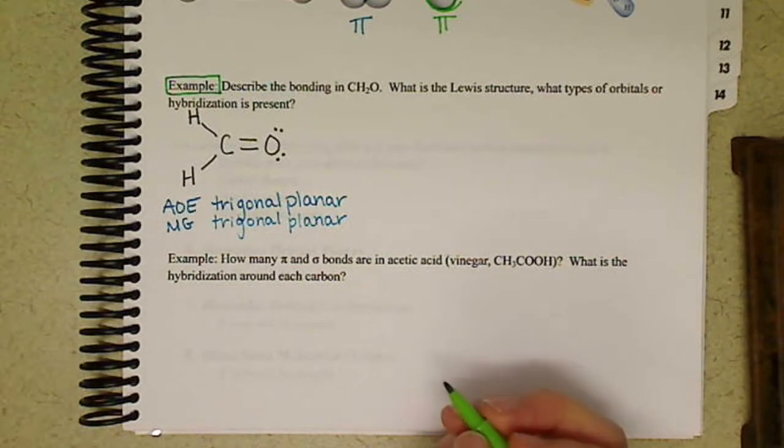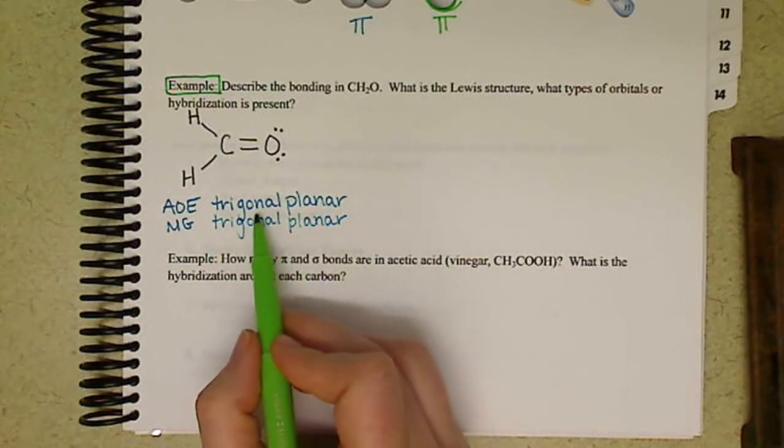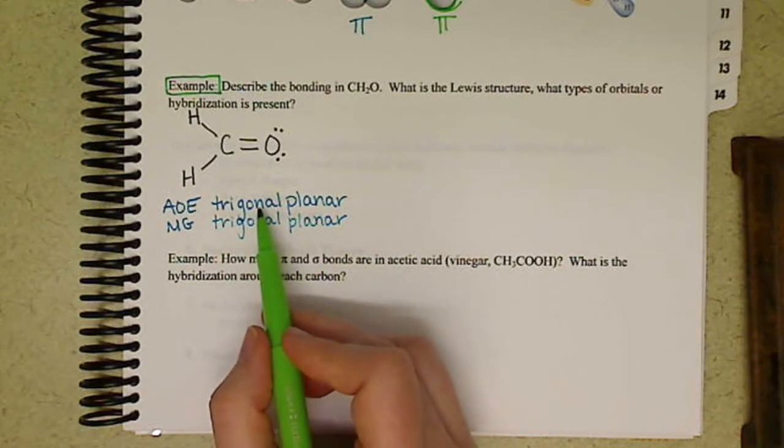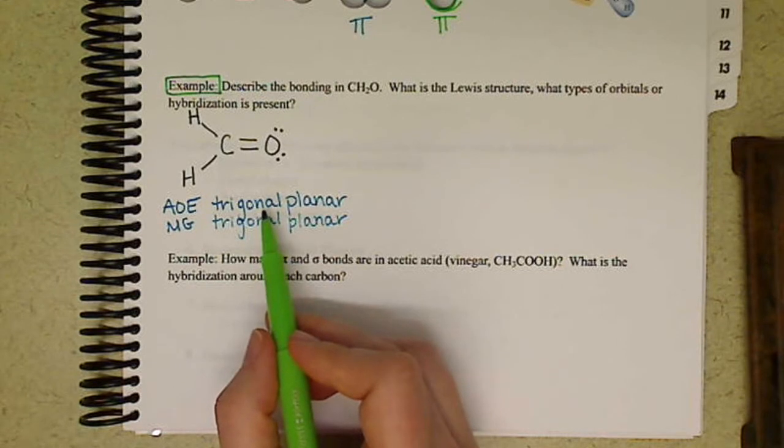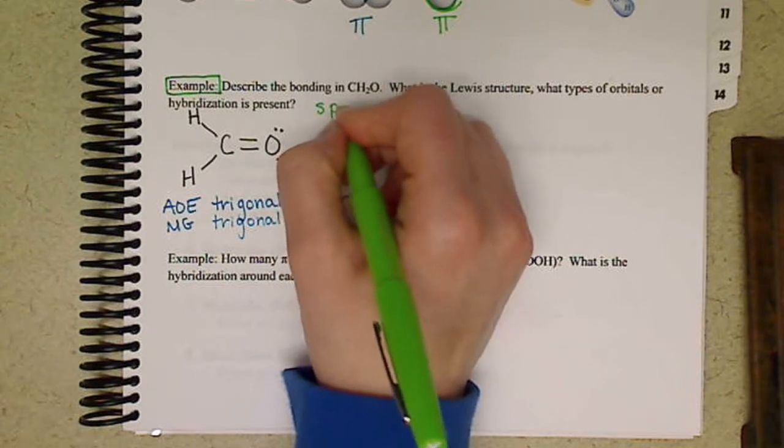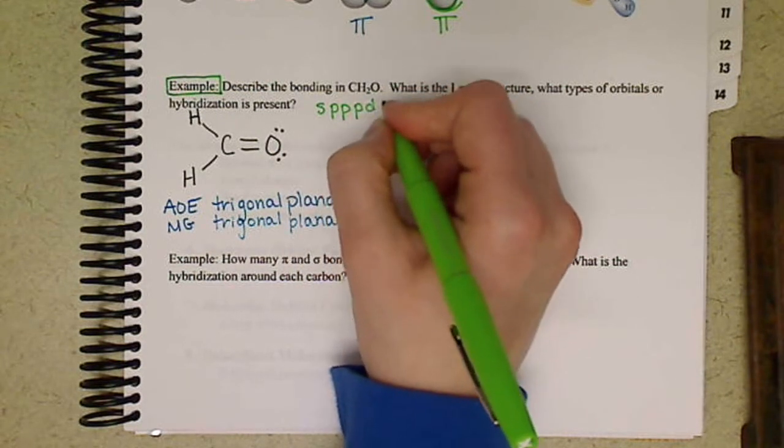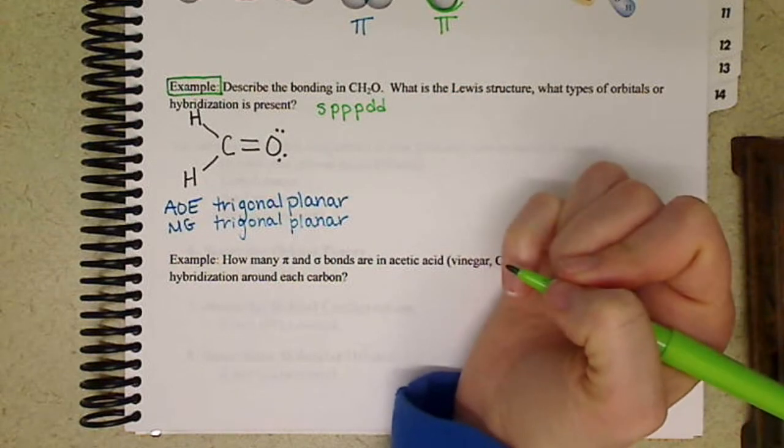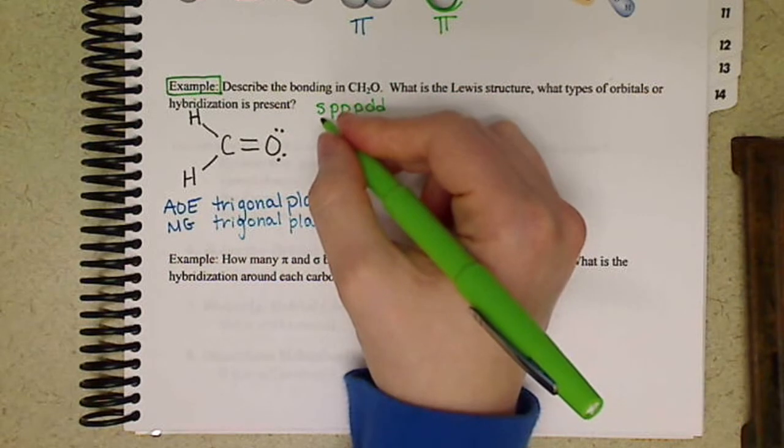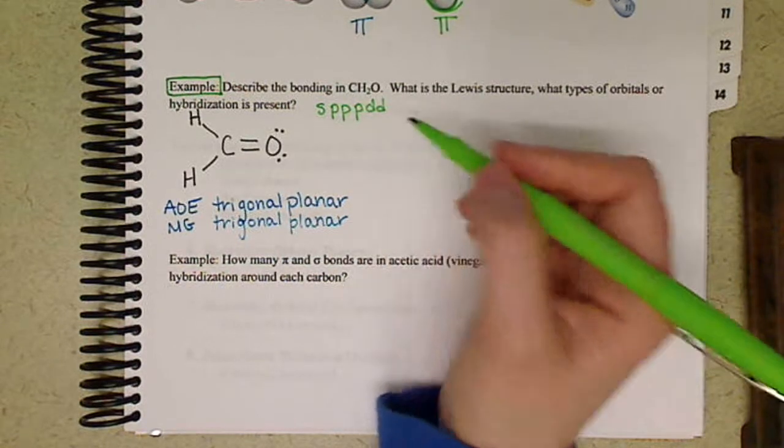To look at the hybridization, one way you can do it is you can know and associate trigonal planar with sp2. The other way is, it's kind of a trick, but if you list out the possible orbitals that we can hybridize,